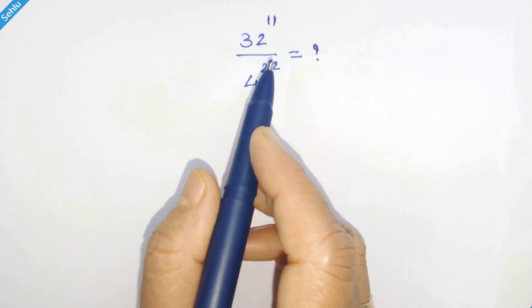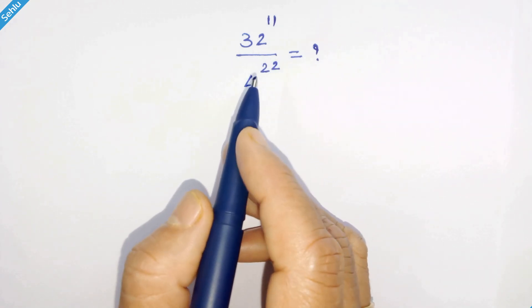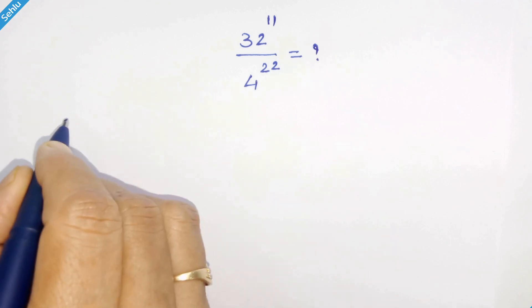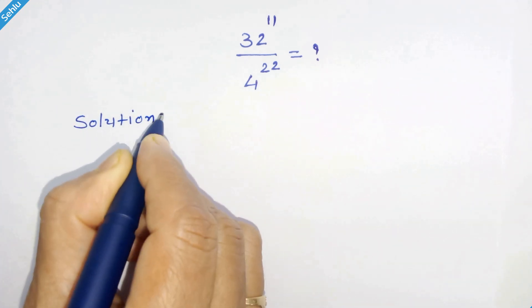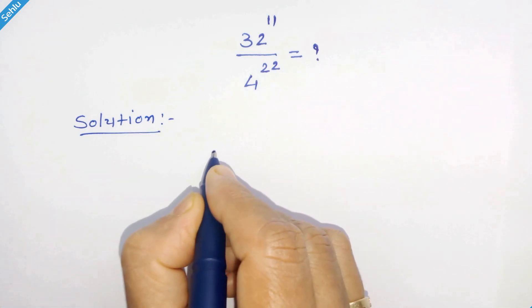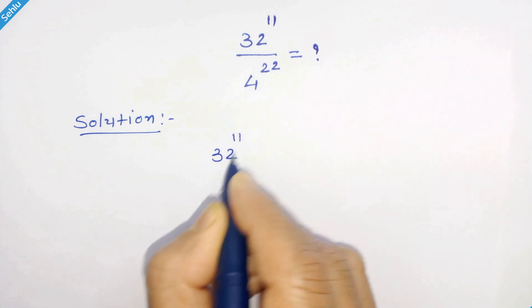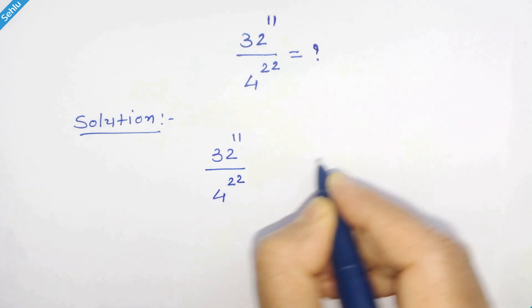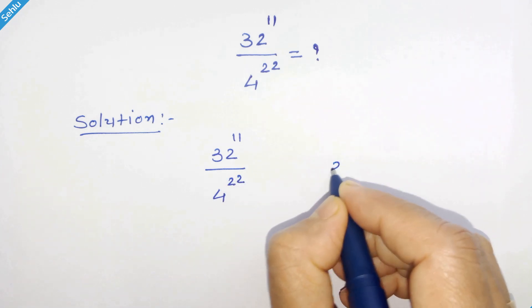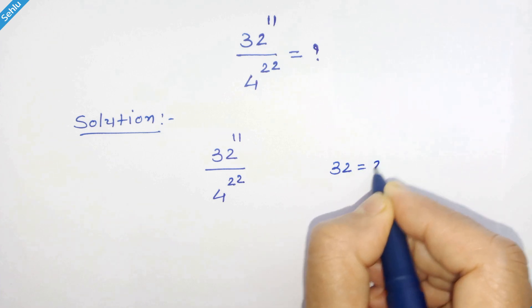Hello friends, this is our question and how do we simplify this. Let's start. So our question is 32 raised to 11 upon 4 raised to 22. Now as you know, 32 is 2